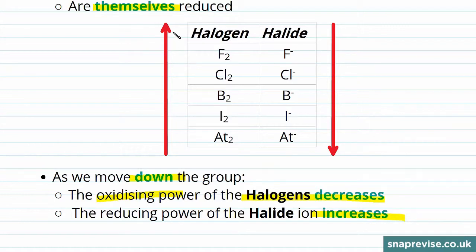The oxidizing power of the halogens increases up the group and the reducing power of the halide ions increases down the group. The fluoride ions, nearest the top, are some of the weakest reducing agents, and the iodide ions near the bottom are much stronger reducing agents.